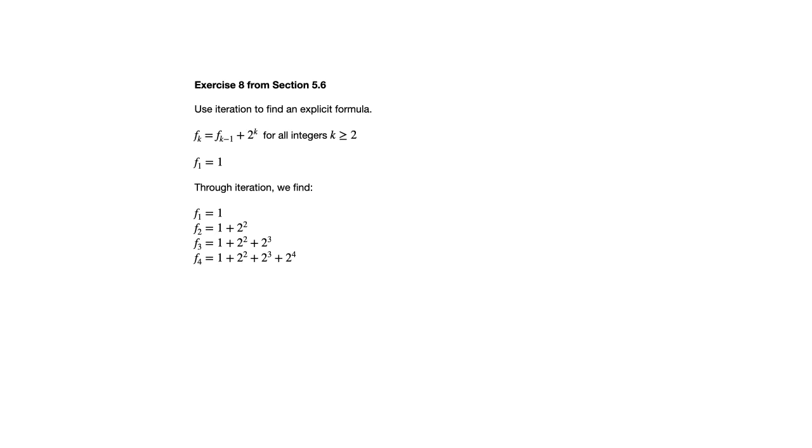F sub 4 would take that expression and add 2 to the 4th to it. Based on this, we can see that each time we're adding a power of 2. So if we wanted to write down what f sub n would be, it must be 1 plus 2 squared plus 2 cubed plus 2 to the 4th, all the way up to 2 to the n, which is the last power of 2 added to get that term.